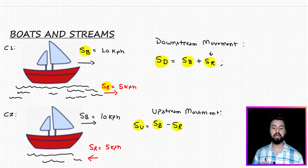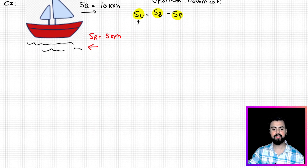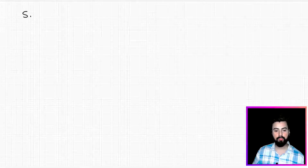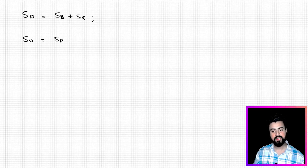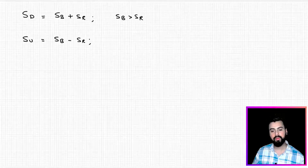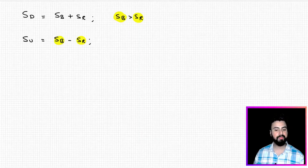So those are the two important speeds: speed downstream and speed upstream. Please remember these. By default, we assume that speed of boat is always greater than speed of river, because only then can the boat do upstream movement — otherwise it's not possible. That is why speed upstream is always speed of boat minus speed of river.